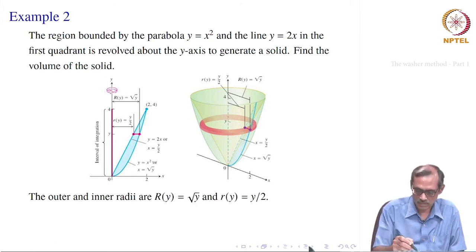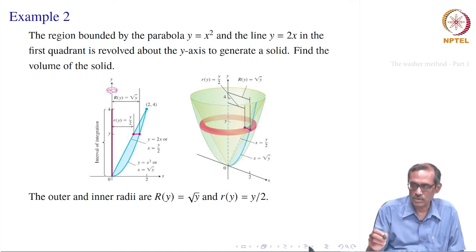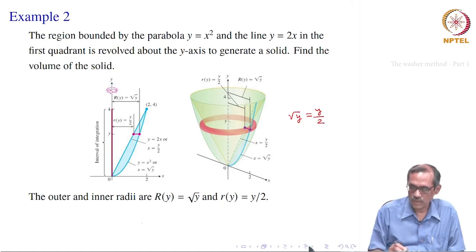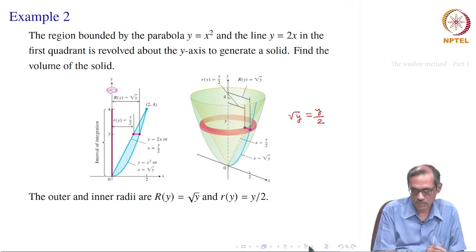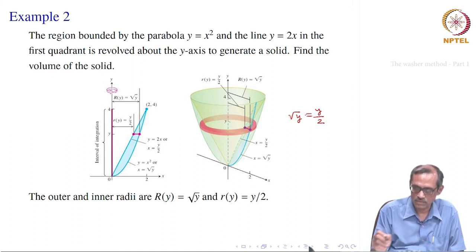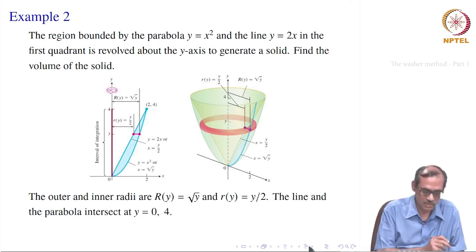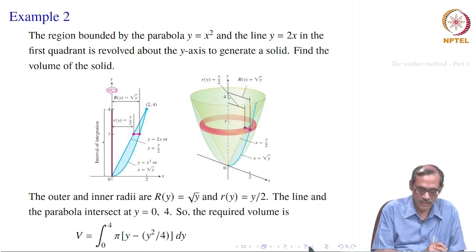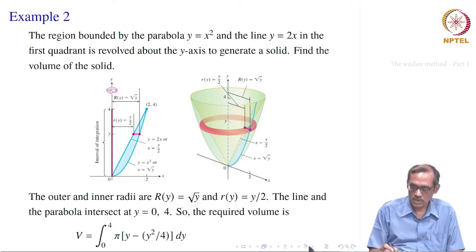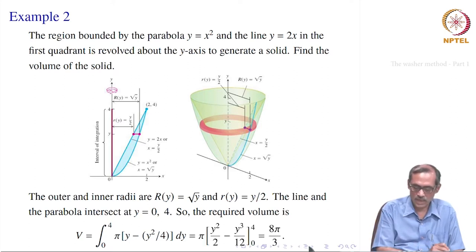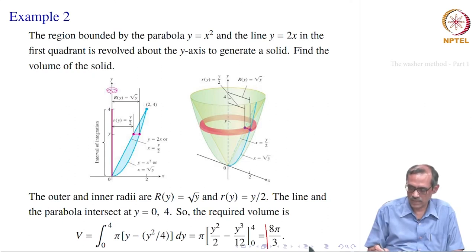To find the limits, we eliminate x: √y = y/2 gives y = 0 and y = 4. So the limits are 0 and 4. The volume is the integral from 0 to 4 of π times [(√y)² − (y/2)²] dy = π times ∫(y − y²/4) dy, which simplifies to 8π/3.